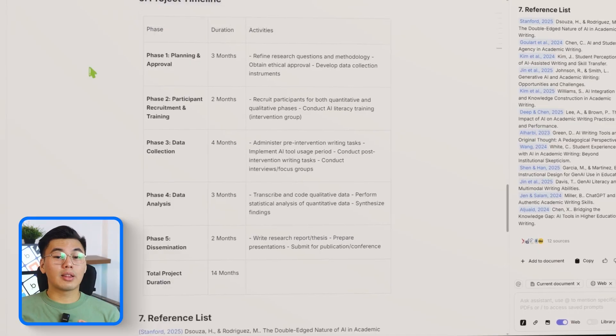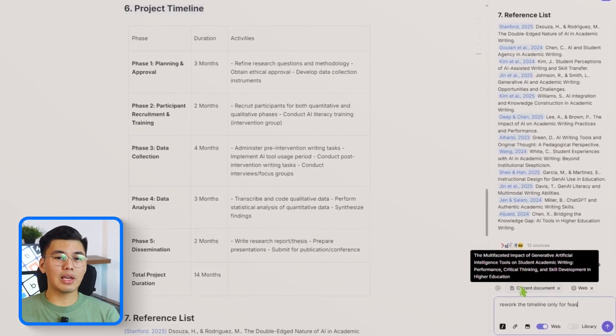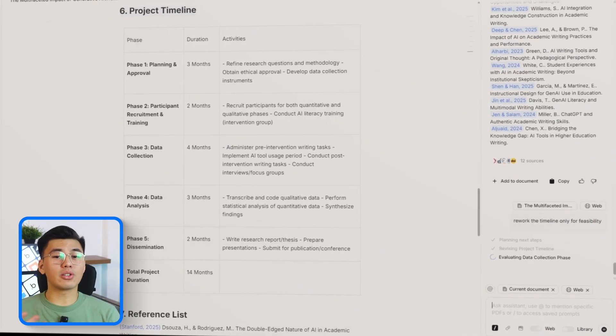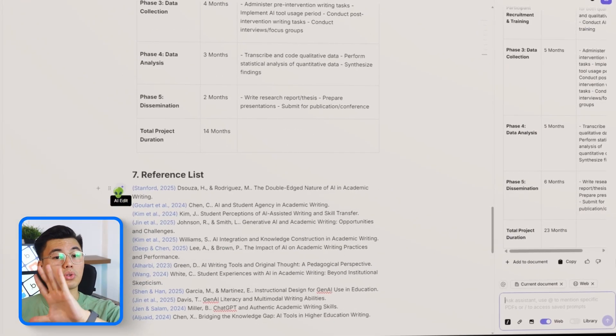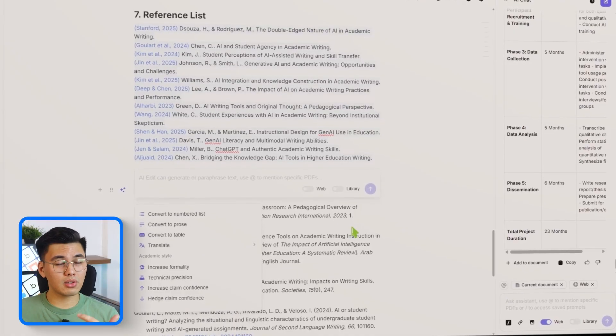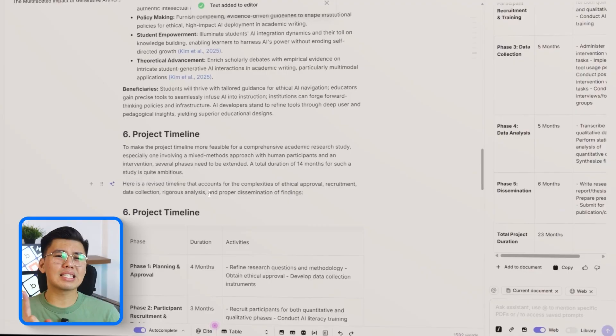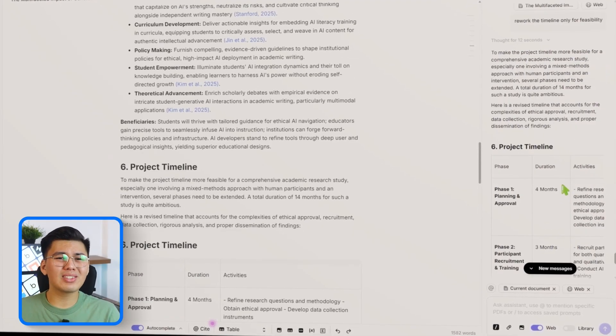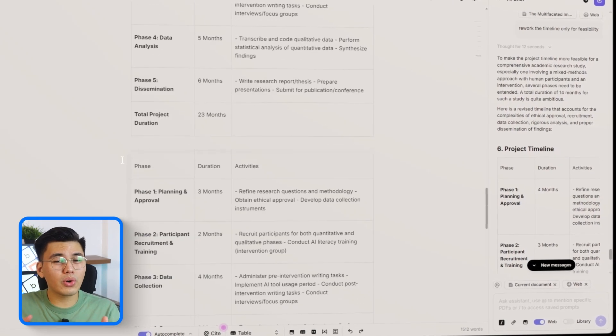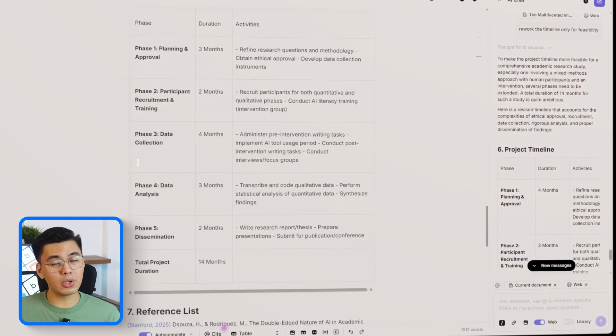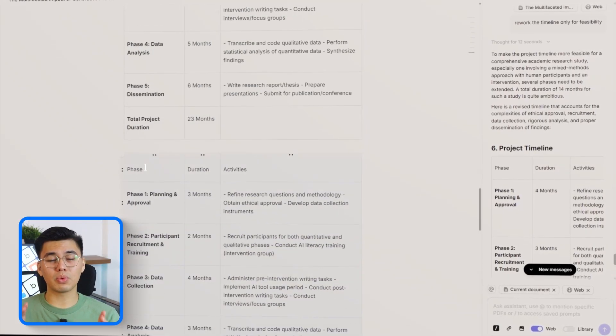Alright, we're now going to clean up the project timeline - the part that shows how the research will actually play out month by month. I'll select the entire schedule and run it through Jenny's enhancement tools. Jenny smooths out the sequencing, tightens the descriptions, and makes sure each stage flows naturally into the next. This helps transform what might start as a basic list of steps into a timeline that actually feels organized, purposeful, and doable.